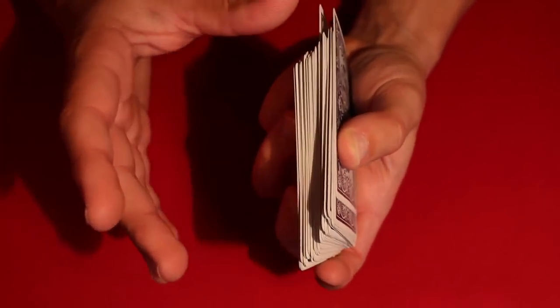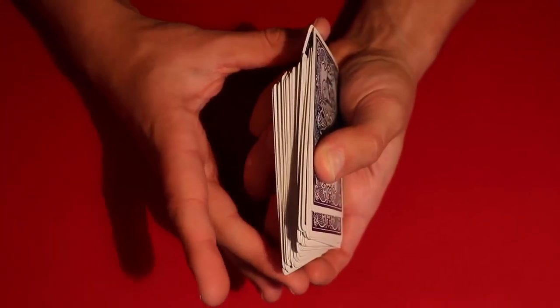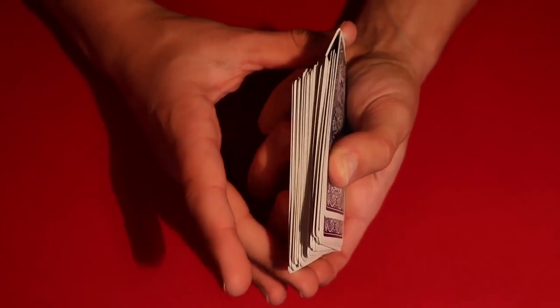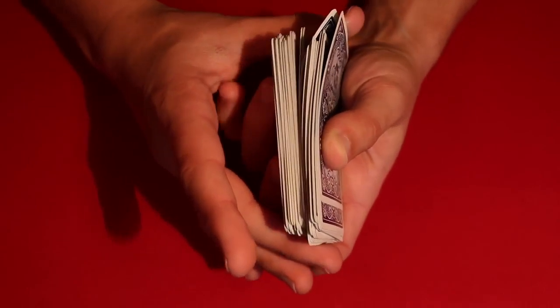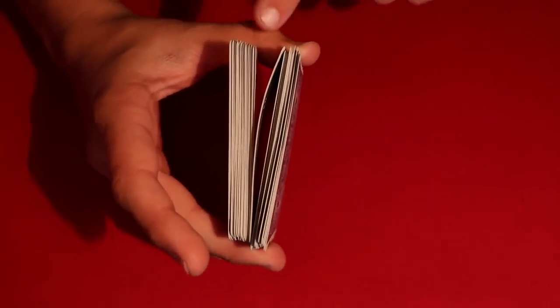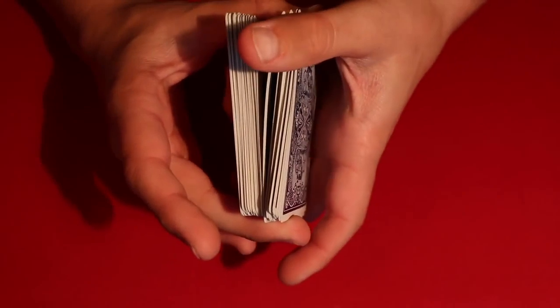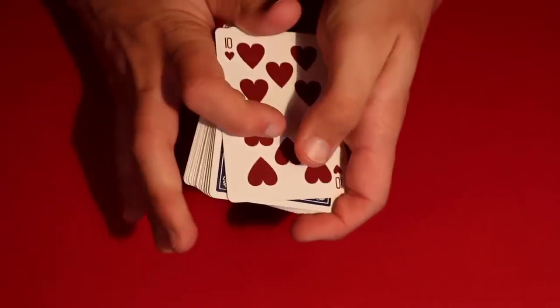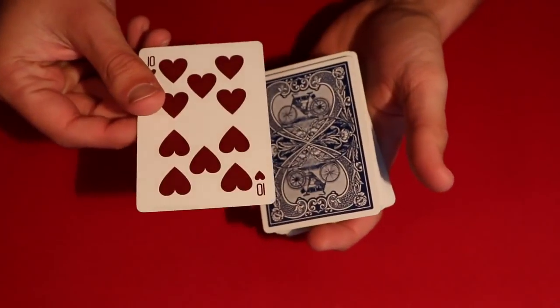So right above this out-jog, all you have to do is take your thumb and your middle finger, push up into the card, and then close the grip. And that's going to cause the deck to form a break right here. And all you do is pick up from the break, and that's going to be how you bring the spectator's card to the top.